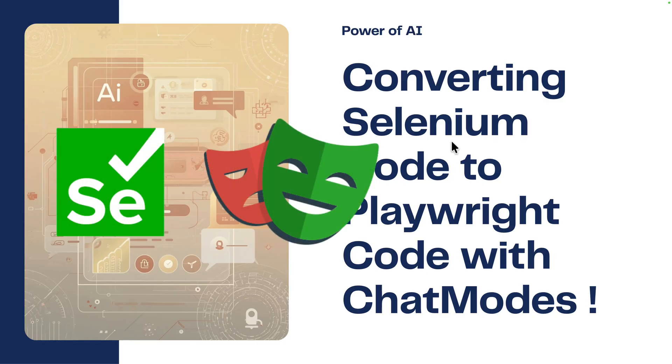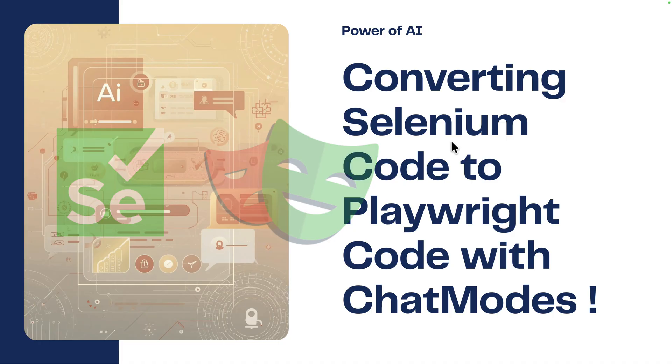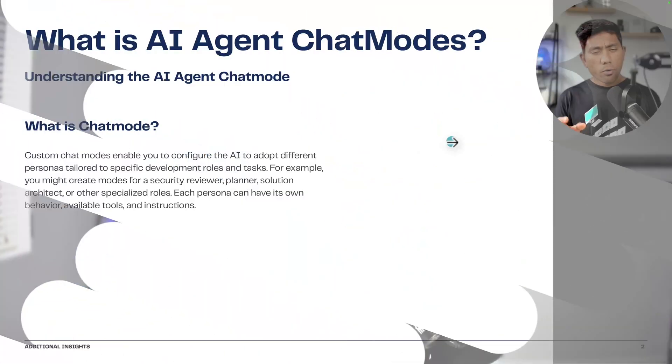Hi guys, welcome back. Today in this video we'll be talking about how we can do the conversion of existing Selenium tests to Playwright test code with the power of artificial intelligence and GitHub chat modes. This topic came to me as a question at my conference in Auckland earlier this week, where someone asked: we have Selenium test code and want to convert it to Playwright code — how can we do that?